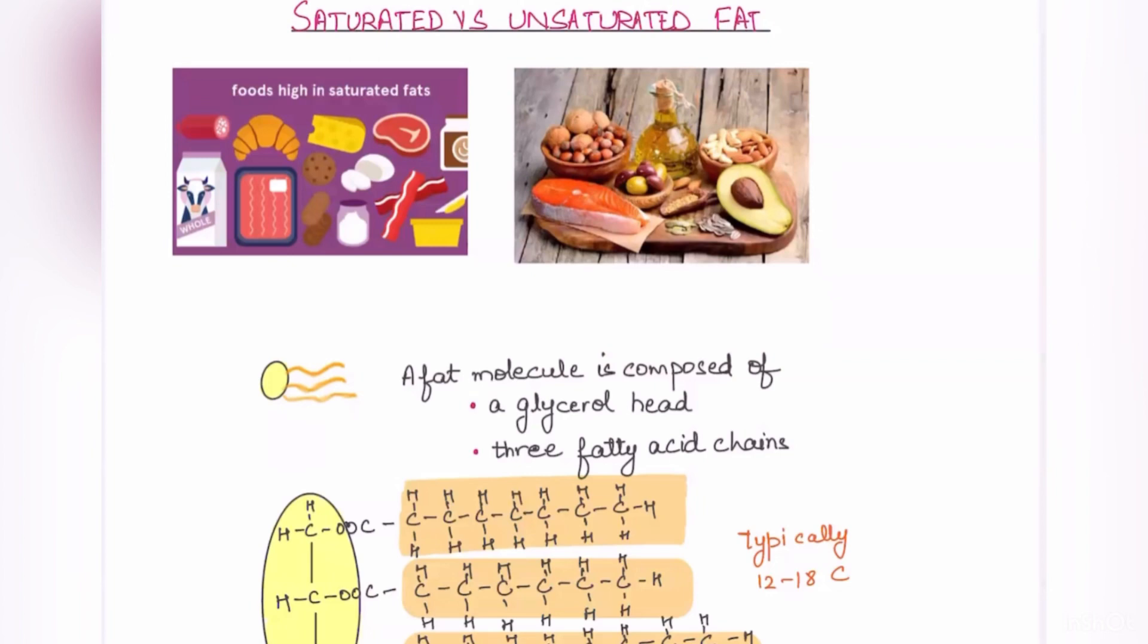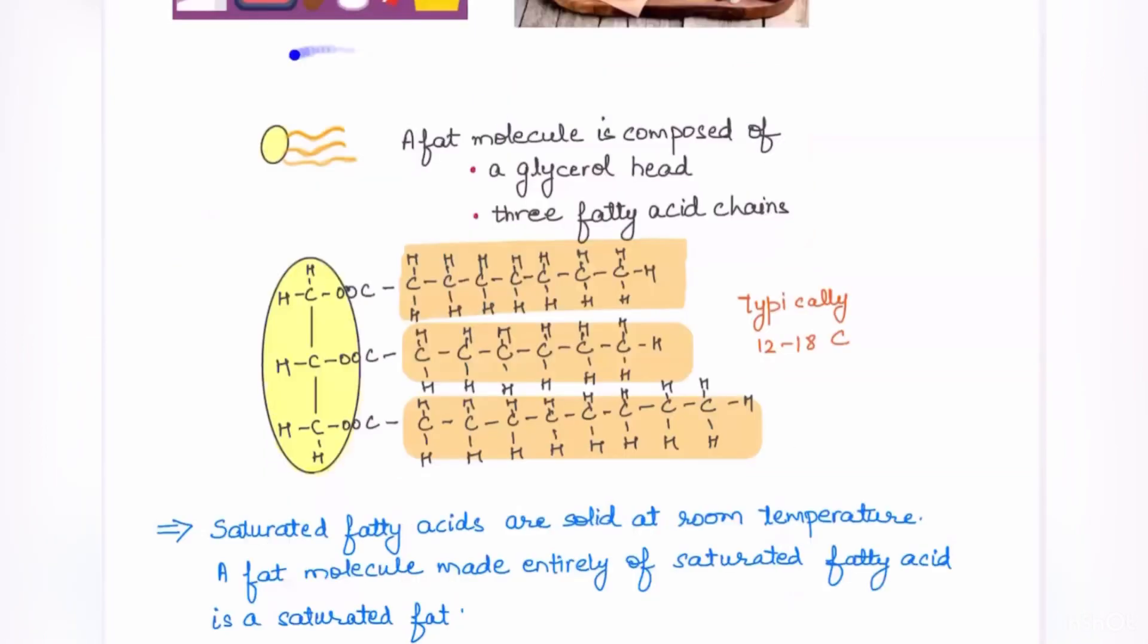But there are some essential fatty acids which we need to have in our diet and which are very important for proper functioning of important organs of our body, for example, brain. So first of all, let's understand what is a fat. Fat, also called lipid, is one of the macromolecules which is an energy storage molecule. That means its major role is to give energy to the body and to store that energy for future purpose.